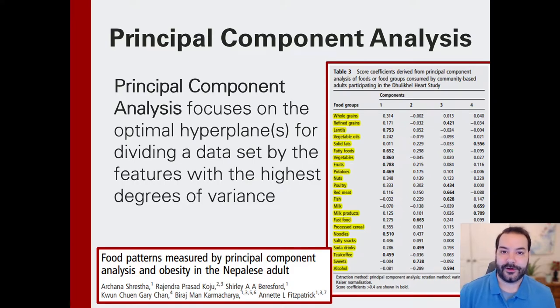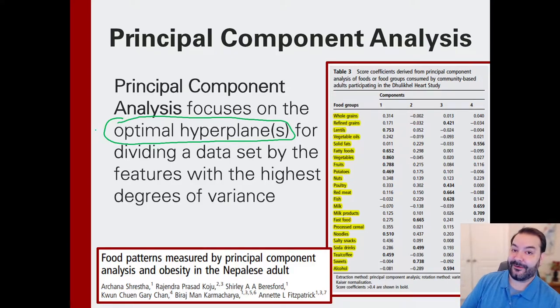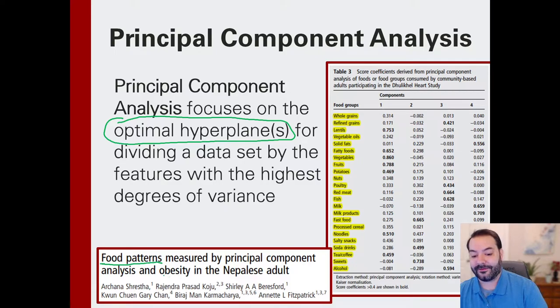So what is principal component analysis? Big fancy five dollar word. Well, it's meant to calculate the optimal hyperplanes when we're dealing with a large data set. I know that that is also a very, that's not even a five dollar word, that's a ten dollar word. But the entire idea, just to work off of, say, for example, this research paper. So the entire idea is using something like principal component analysis to look at food patterns to identify obesity in Nepalese adults.